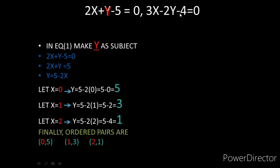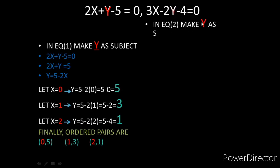Now for equation 2: 3x - 2y - 4 = 0. The coefficient of x is 3 and y is 2. Our priority list is 1, 2, 5, 10, 4 — we can identify 2 as a coefficient, so we make y the subject.